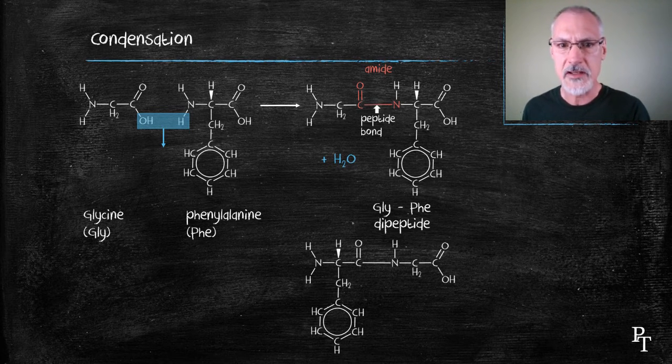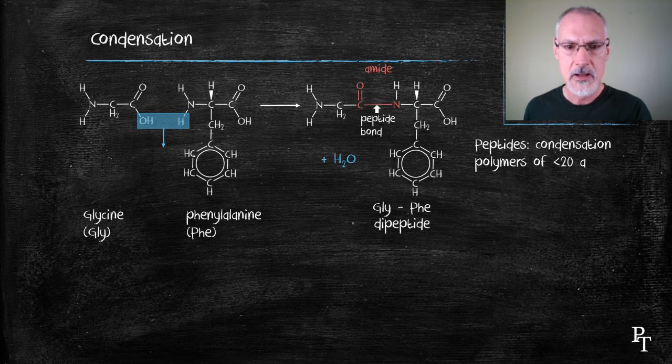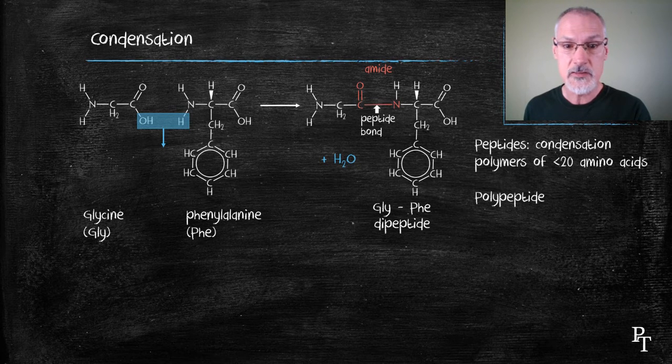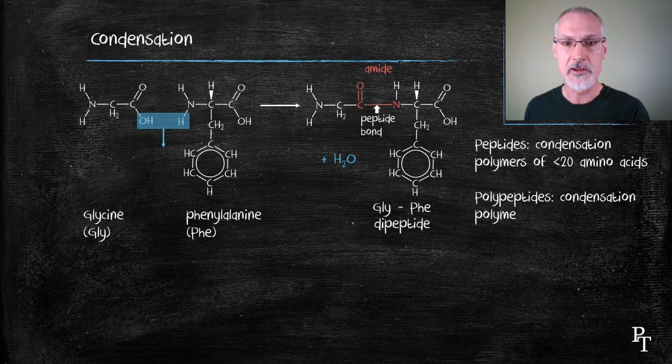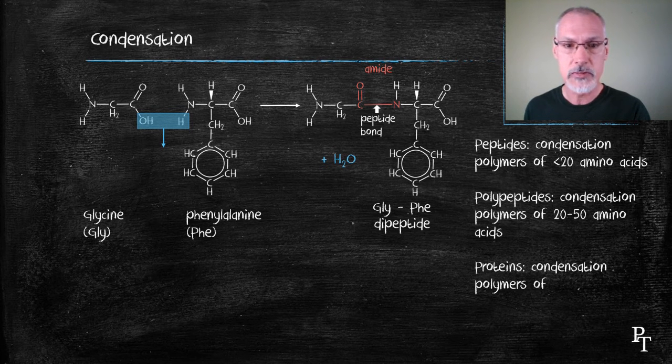Now the word peptide is used to describe the behavior of up to 20 amino acids. Once I extend it beyond 20, 20 to 50 amino acids, I refer to it as a polypeptide. And beyond 50 amino acids, I call the substance a protein.